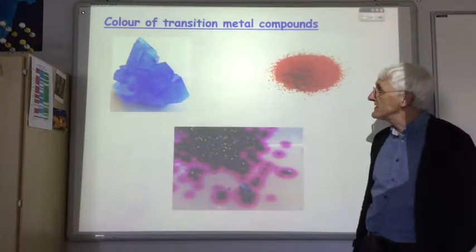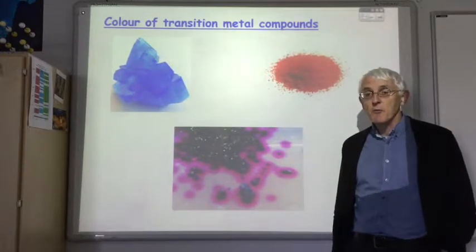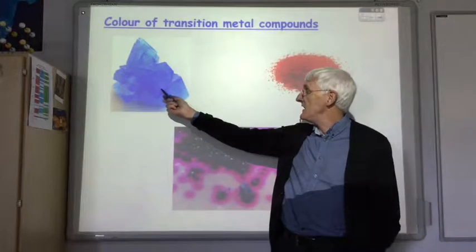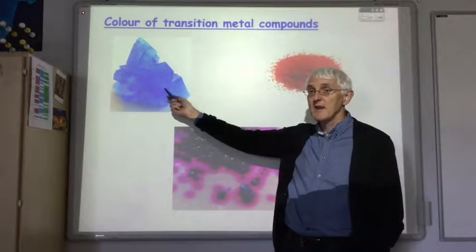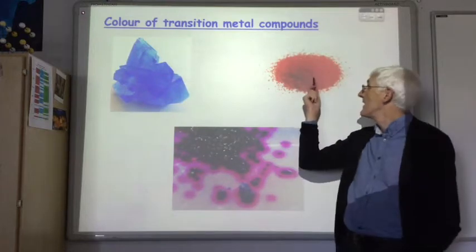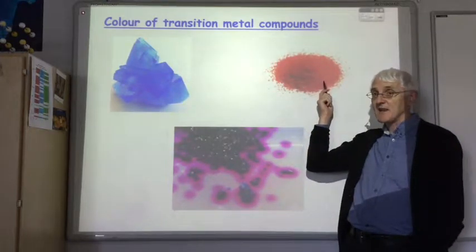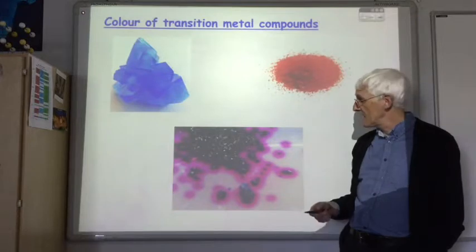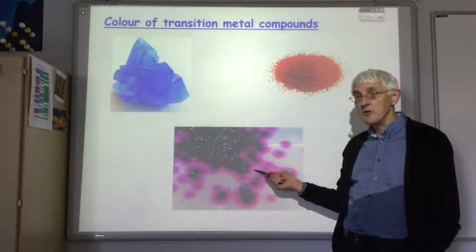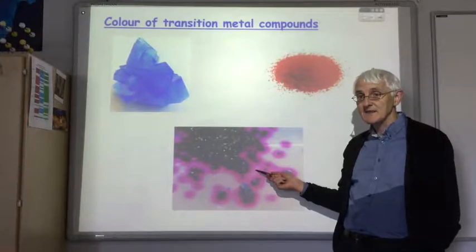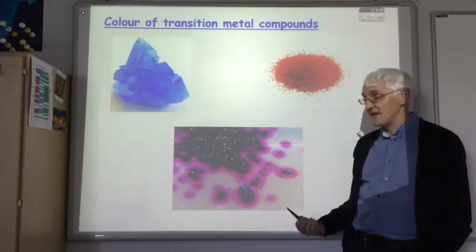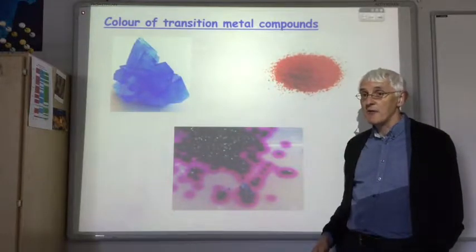Unlike most metal compounds, transition metal compounds are very often coloured. Here we see the blue copper sulphate, and the blue colour is caused by the copper ions. This is potassium dichromate, and the orange colour is due to the chromate ions. And this is potassium permanganate, the purple colour being due to the manganate ions. So the first thing I want to do today is to explain why transition metal compounds are often coloured.